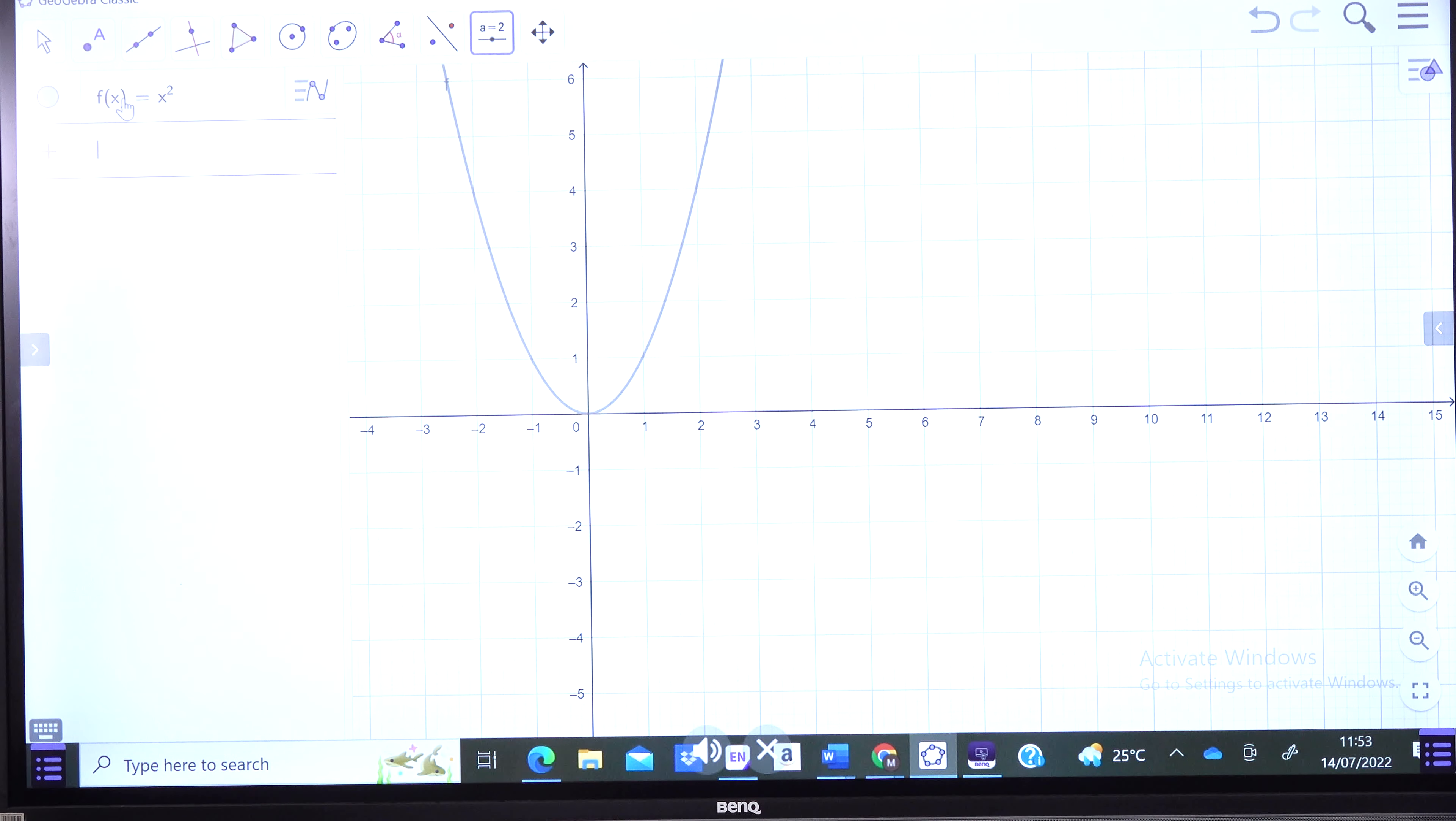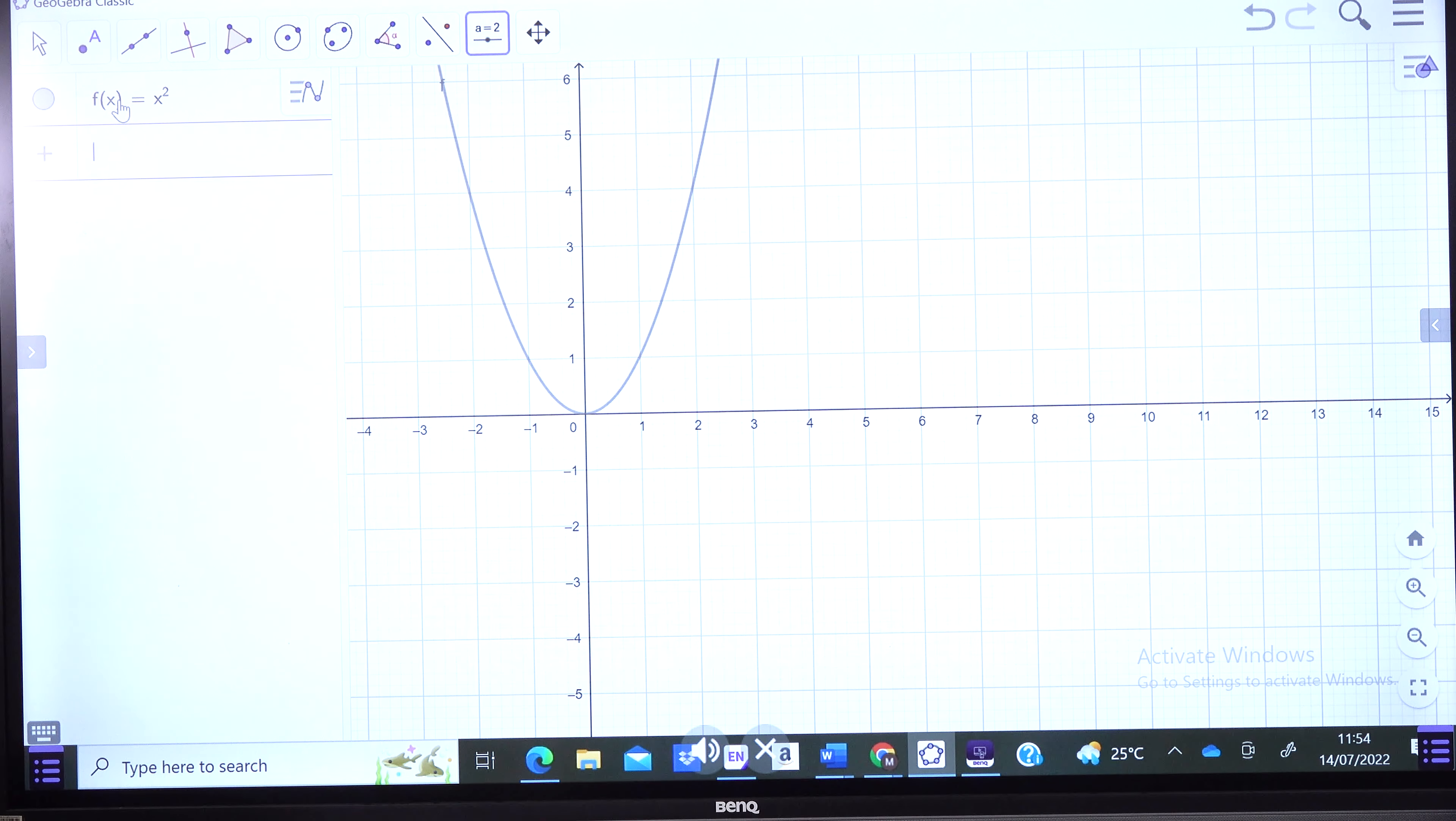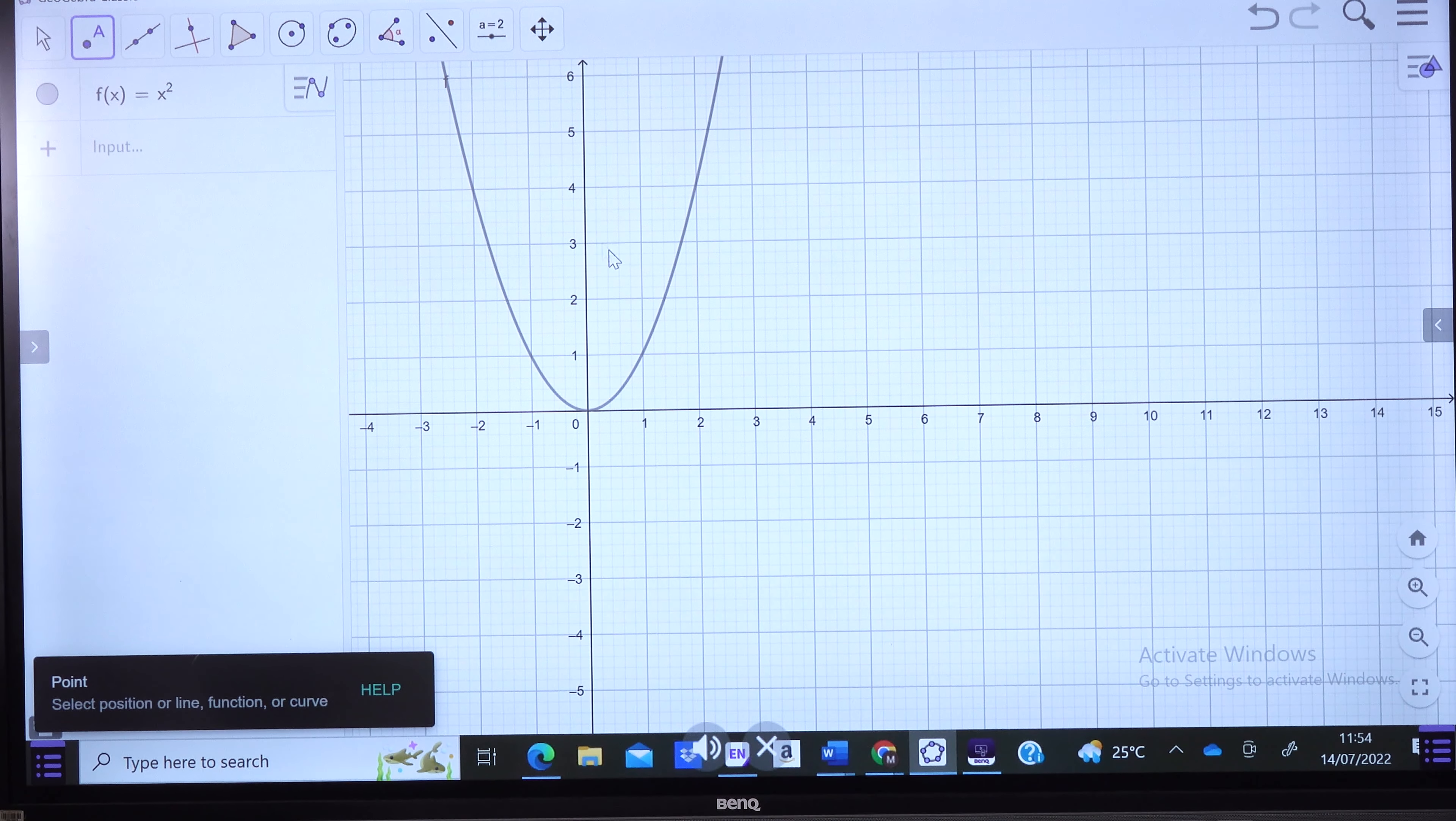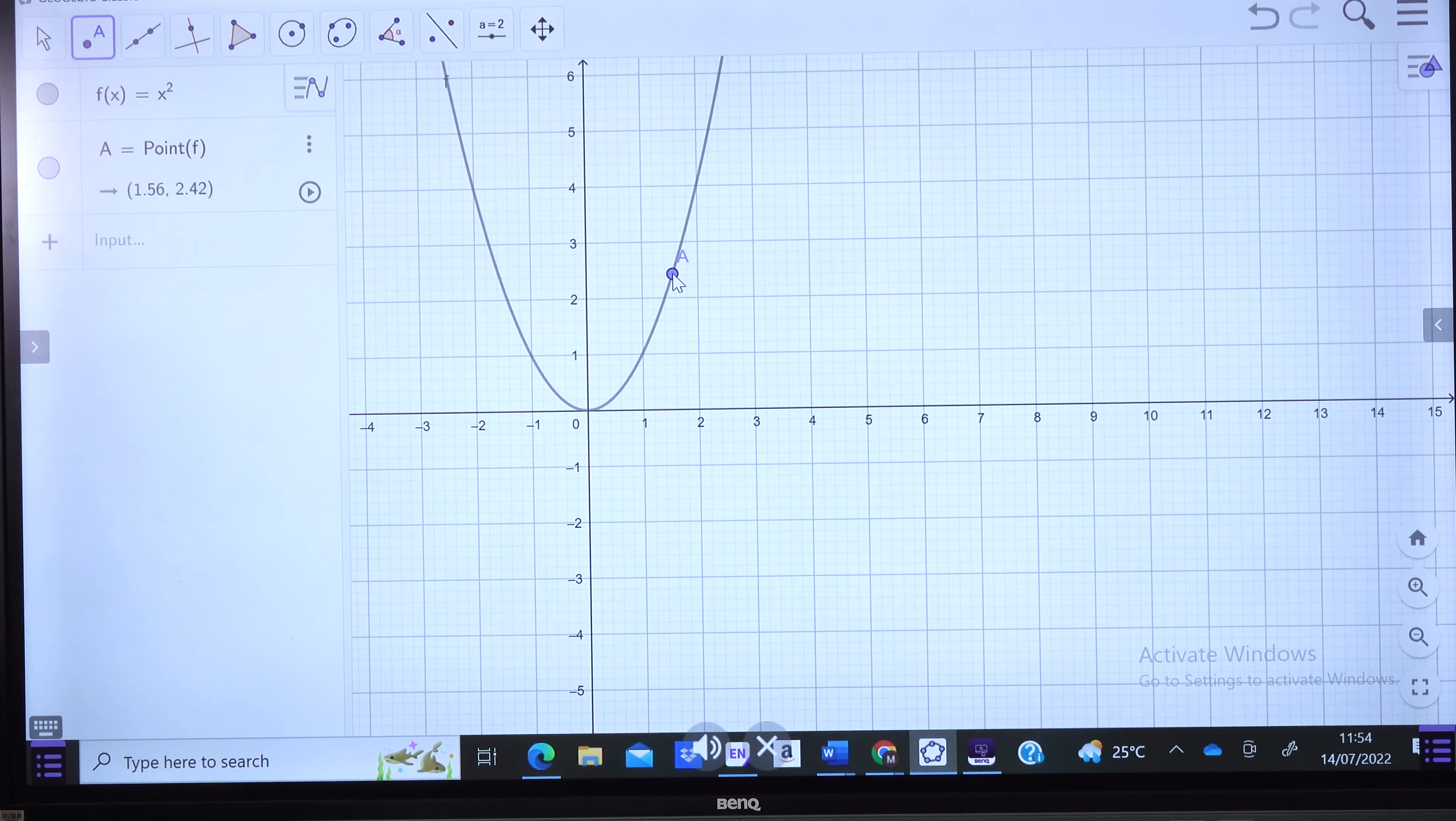We are going to enter the function and we see the graph as that. Then on that graph, on that curve, we put a point along the curve. So there we have the point A.